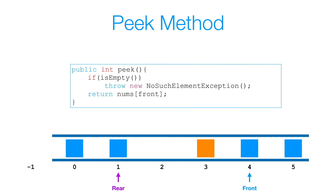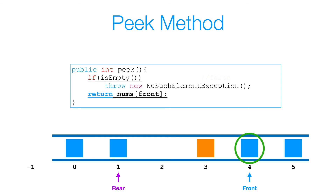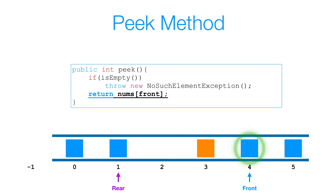Now let's look at the peek method. Our peek method is very simple. The first thing we want to do is check if our queue is empty, because if it is, we simply throw a new NoSuchElementException to indicate that there are no elements currently in the queue. If our queue is not empty, we simply return the data associated with the front index in our queue.